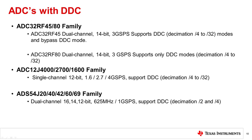Some examples of TI parts that have an internal decimation function: the ADC32R45 family, which is a dual-channel 14-bit 3 gigasample per second ADC, has several decimation options from 4x all the way up to 32x. The ADC12J4000 family is a single converter with options from 4x to 32x, whereas the ADS54J60 family only offers 2x and 4x decimation.